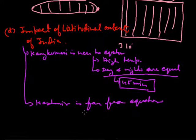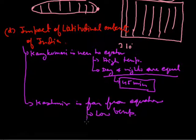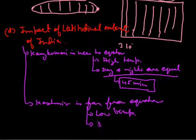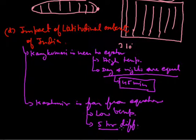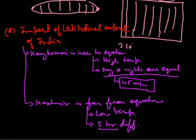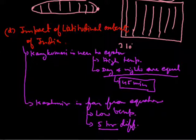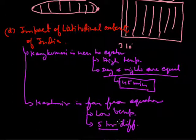On the other hand, Kashmir is too far from the equator. So the first effect there is low temperature. The second effect is that days and nights are not equal — there is a 5-hour difference. During winter the nights are very long, and during summer the days are very long. The difference between the longest day and longest night is approximately 5 hours in Kashmir.